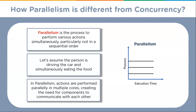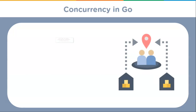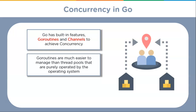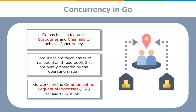Now understanding the differences, we will understand concurrency in Go. Popular programming languages like Python and Java use thread pools to execute concurrency, whereas Go has built-in features — goroutines and channels — to achieve concurrency. Goroutines are much easier to manage than thread pools that are purely operated by the operating system. Go works on the Communicating Sequential Processes (CSP) concurrency model.